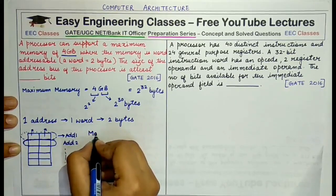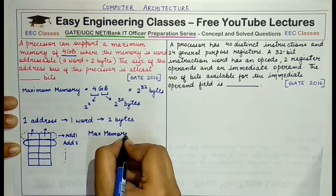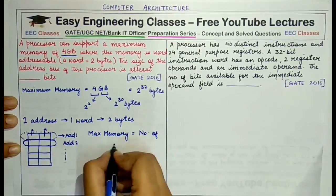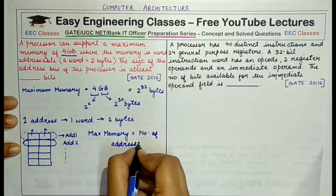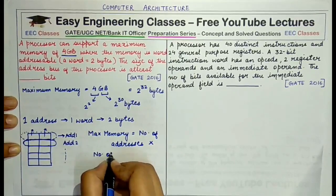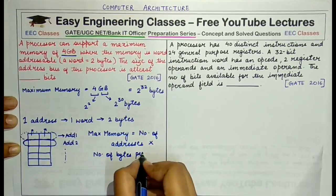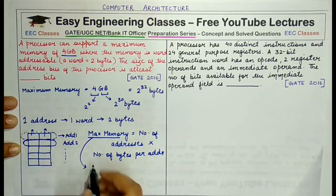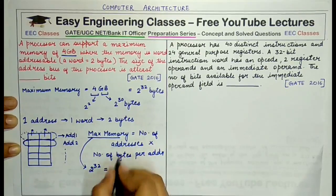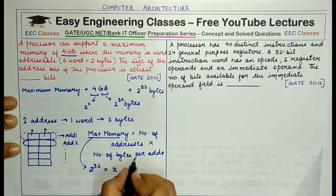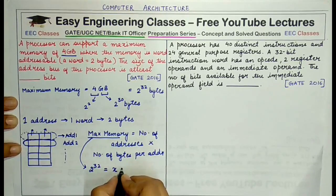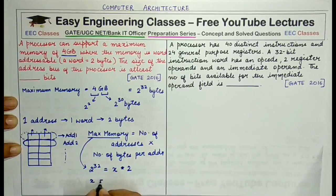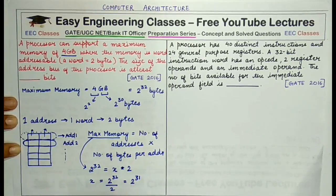The basic formula for calculation in such questions is: maximum memory equals the number of addresses multiplied by the number of bytes per address. The maximum memory is 2 raised to power 32 bytes. We have to find the number of addresses — call it x — multiplied by the number of bytes per address, which is 2. So x equals 2 raised to power 32 divided by 2, which equals 2 raised to power 31.